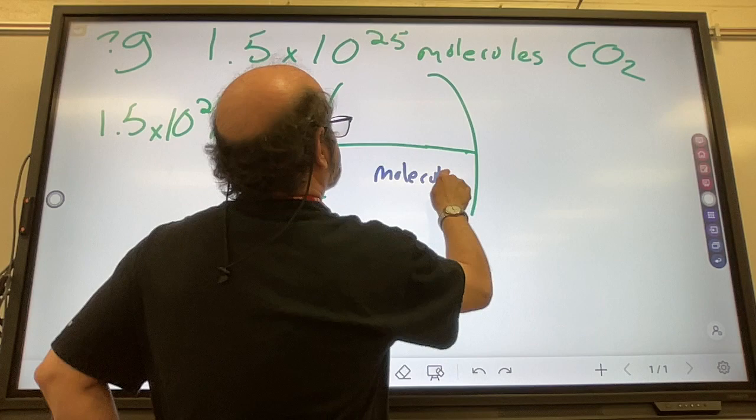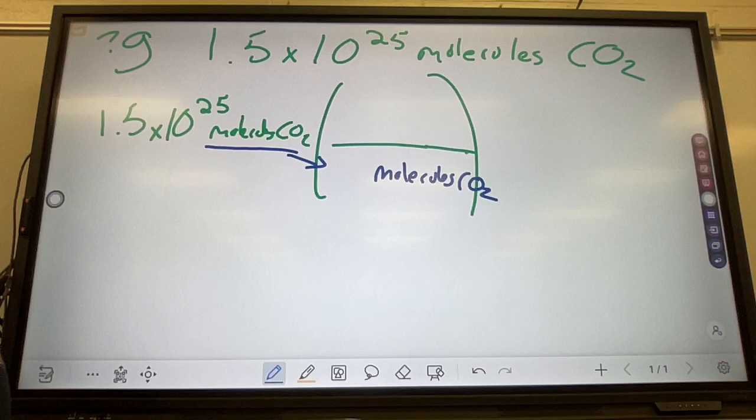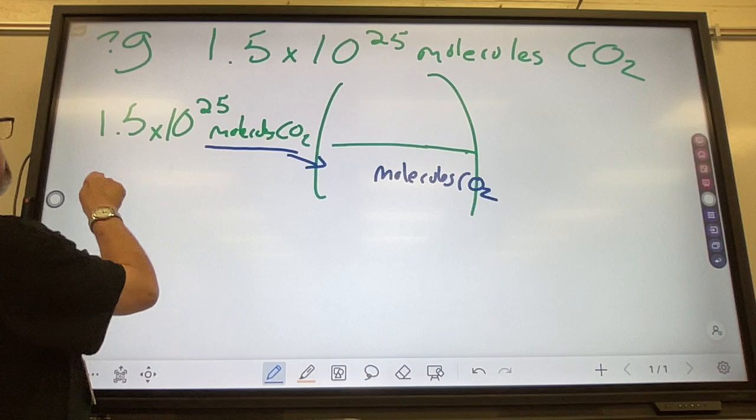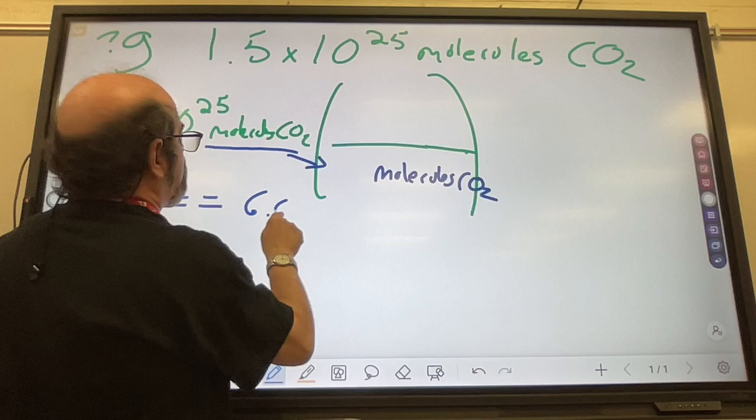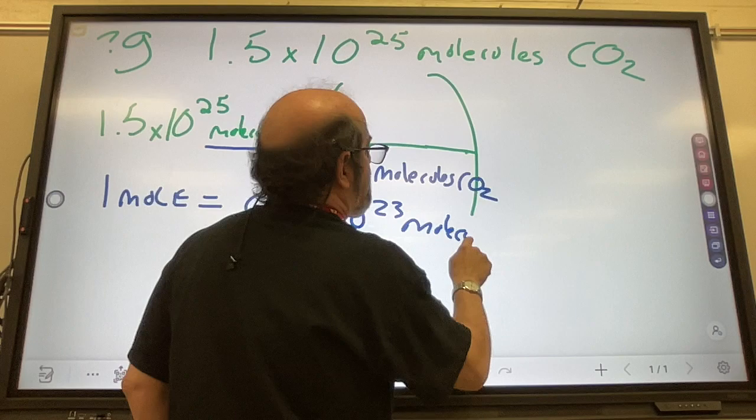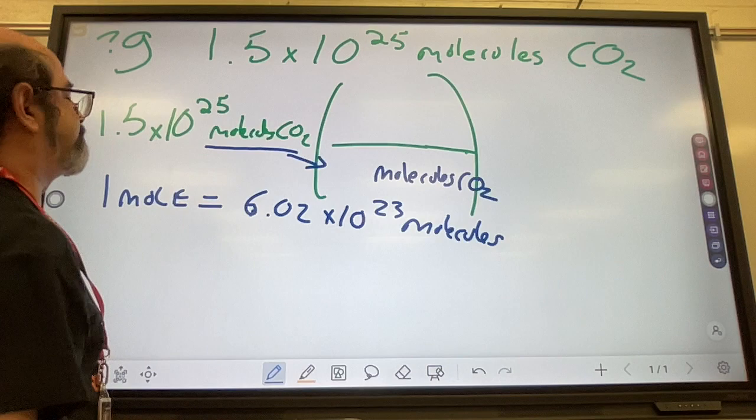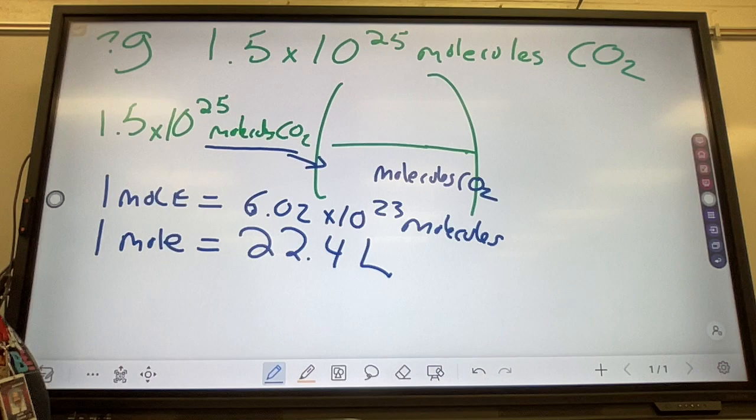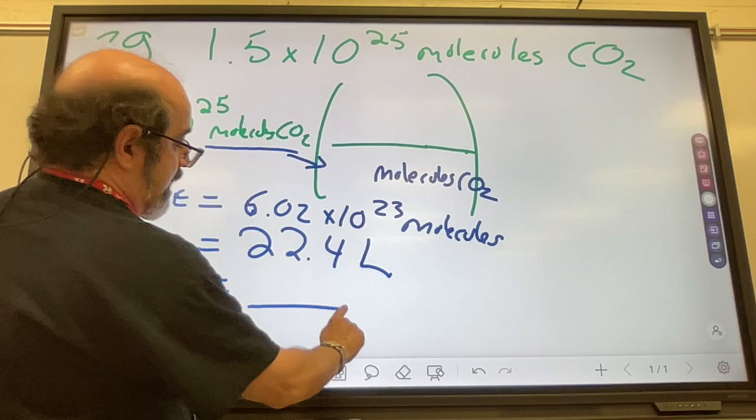Now, what can we convert? Because we need a conversion factor. What can we convert to molecules? Well, here's some conversion factors you guys should know. 1 mole equals 6.02 times 10 to the 23rd molecules or atoms. That is conversion factor number 1. Another conversion factor you should know is 1 mole equals 22.4 liters.